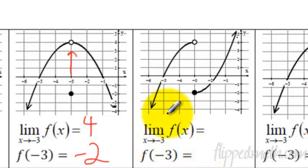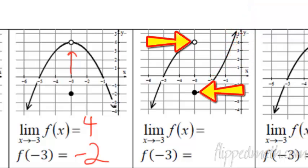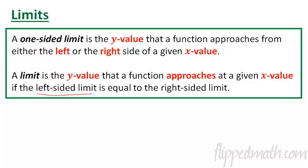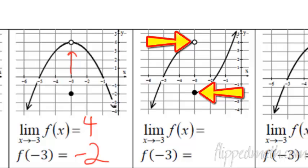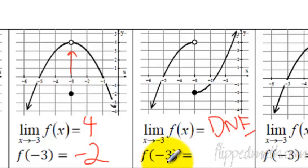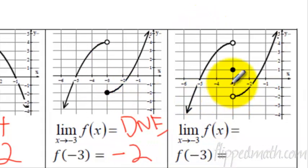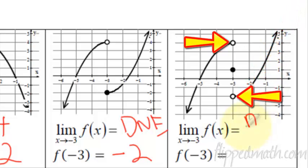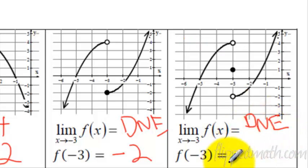Here's example four. The limit on the left side as we're approaching up here is a value of 4. The limit on the right side as we approach from the right is a value of negative 2. Since these don't match — remember, the left-sided limit must equal the right-sided limit — the limit does not exist. Now let's try f of negative 3: the value of the graph at negative 3, the y value is negative 2 — it's where the filled-in circle is, not the open circle. For the last example, the limit from the left side and the right side are not going to the same place, so this one also does not exist. The y value when x equals negative 3 is 1 — the filled-in dot.